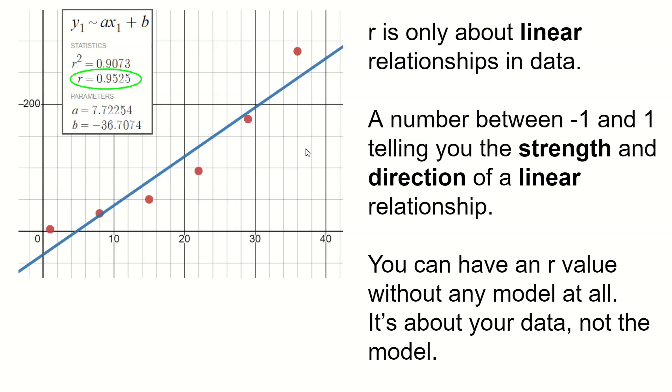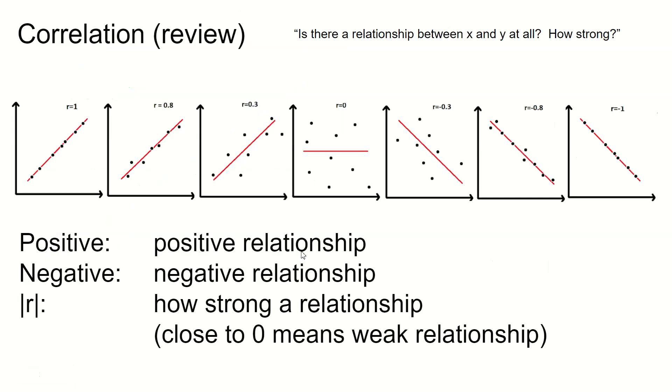It's called the correlation coefficient. And it's about how correlated is your X and Y values. So R is really not about a model. R is really about your data. Here are some illustrations of what different R values, like what different data with different R values would look like. And again, you can have these without the red lines. But if your data is perfectly linear and the relationship is positive, meaning that as X increases, Y increases, then your R value will be 1.